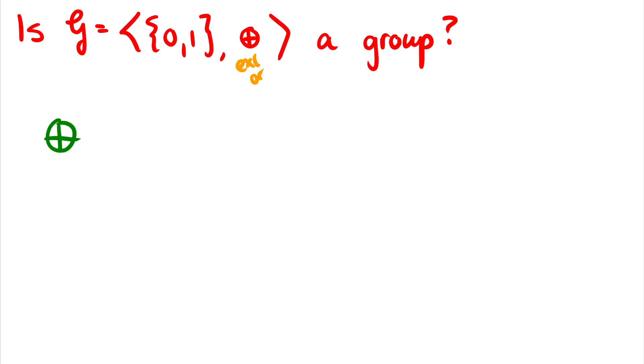So we have the exclusive or operation. We can have 0 and 1 as our first argument. We can have 0 and 1 as our second argument. What is the chart? Well, exclusive or is true when the values are not the same. So it's going to be true when we have a 0 and a 1. It's going to be false when the values are the same. So our chart looks like this.